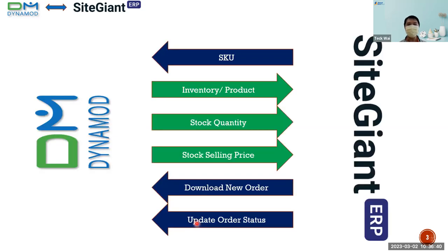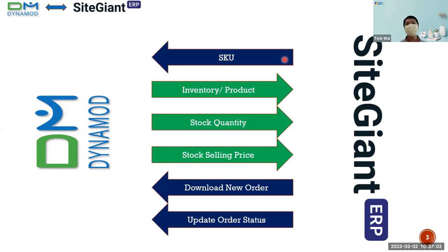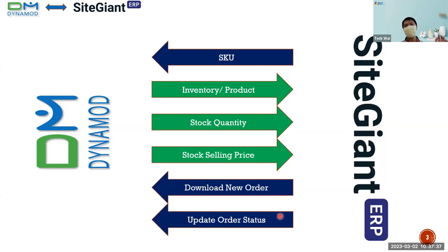First, we look at what will be uploaded to the system and what SiteGiant ERP will provide. In the middle part here, this arrow shows the direction in which data is sent. From the SiteGiant ERP, they will send us the SKU — the item is created manually in the SiteGiant ERP to Dynamo. From Dynamo we can also send inventory items or stock quantity to the SiteGiant ERP, and we can update the selling price to the ERP. Then, the SiteGiant ERP will send us new orders and update order status.